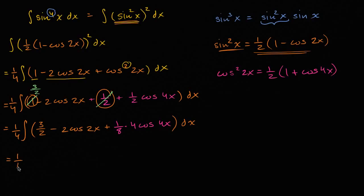So this is going to be equal to, I think we deserve a little bit of a drum roll, one fourth times three halves x minus sine of two x. We can verify this - derivative of this is going to be two cosine of two x, yep, we have it right over there. Plus one eighth times sine of four x. Derivative of sine of four x is going to be four cosine of four x, which is exactly what we have there.